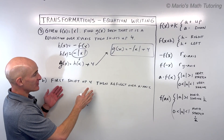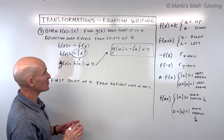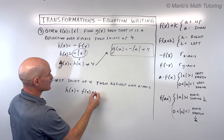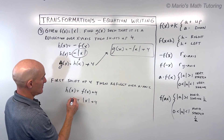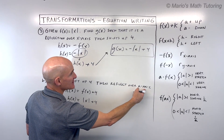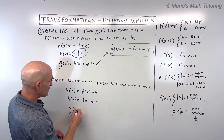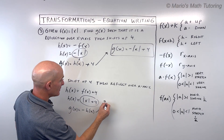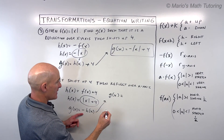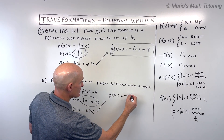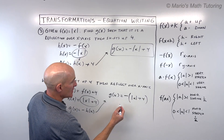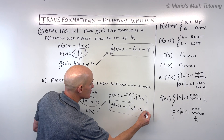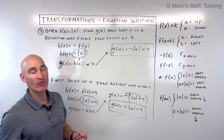For part b, we shift up four first, then reflect over the x-axis. Starting with h of x: shifting up four means f of x plus four, so h of x equals absolute value of x plus four. Then to reflect over the x-axis, g of x equals negative one times h of x. Putting h of x in parentheses and distributing the negative gives g of x equals negative absolute value of x minus four. So is it the same as part a? No — part a had plus four, here it's minus four. The order is super important.